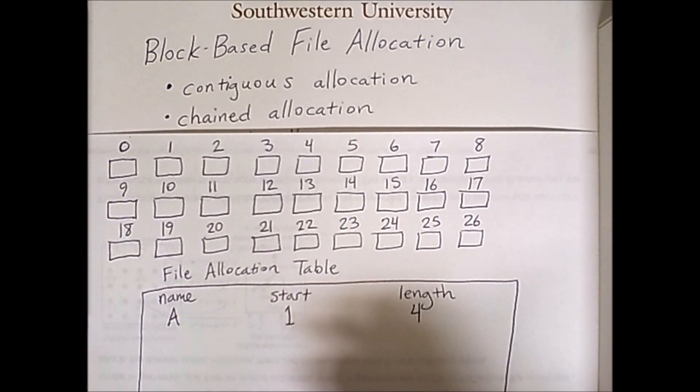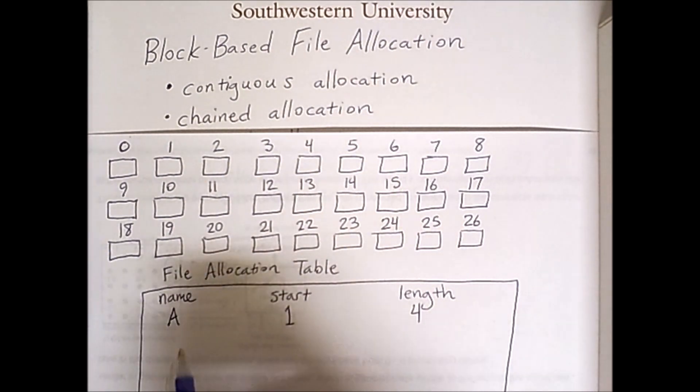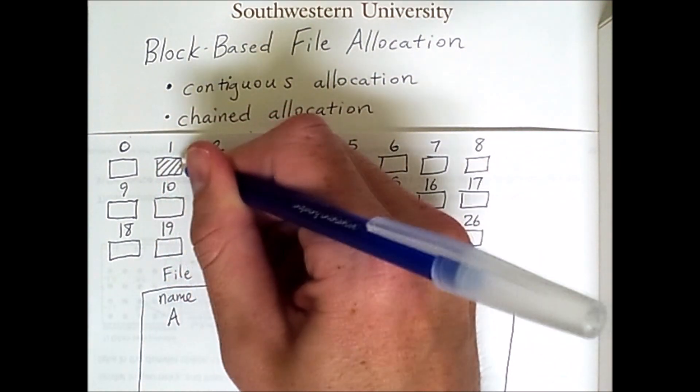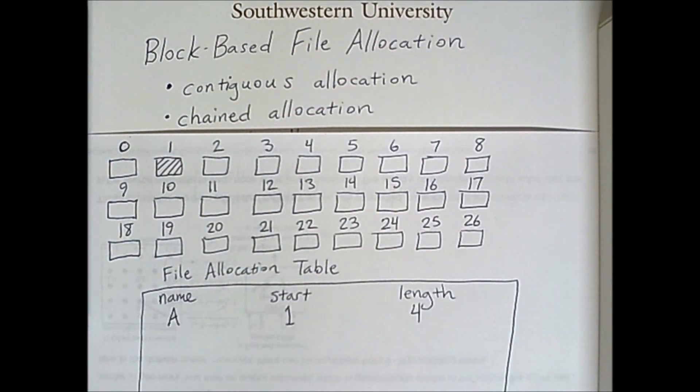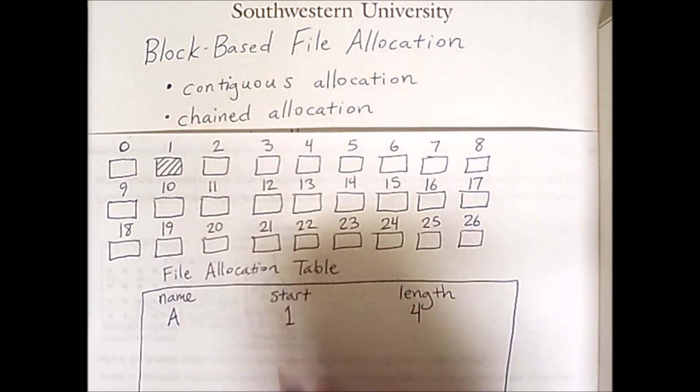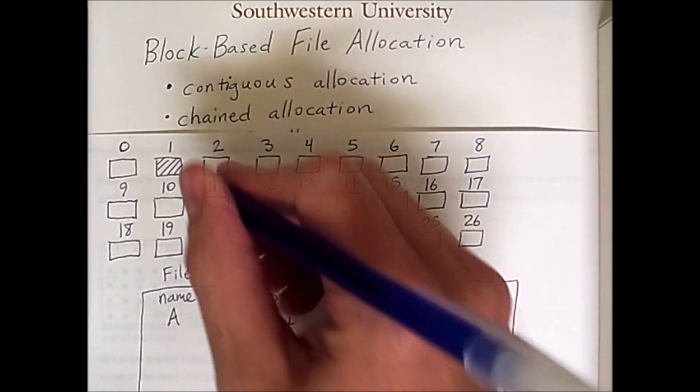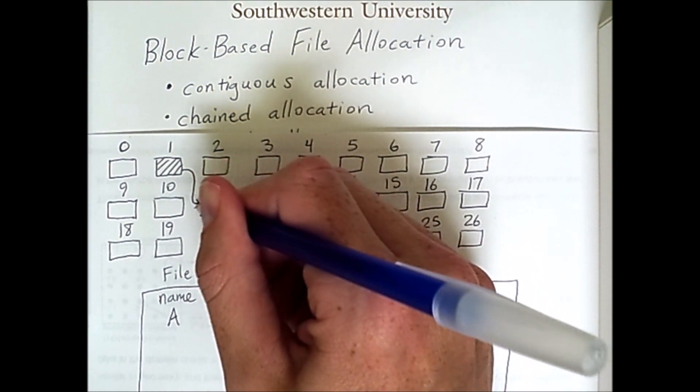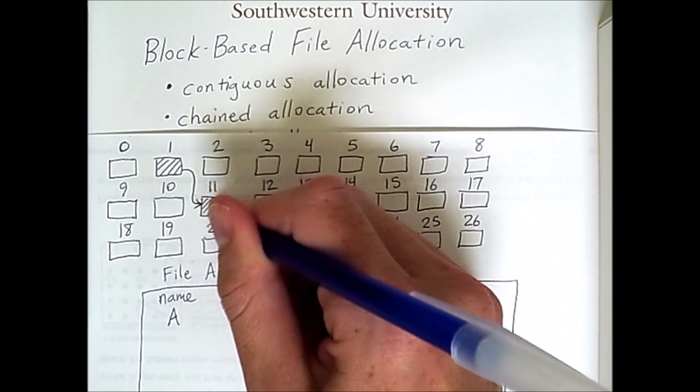An alternative form of file allocation is chained allocation. Now here is an empty disk and I'm going to add a file A that starts at block 1 and has a length of 4 but the way it's represented is with a sequence of chain pointers. So for example I'm starting at block 1 so this block will contain part of the file. However from that point there will be a pointer to where the next block of the file is located and that could in principle be anywhere on the disk. I'll draw it to block 11 and so the next block of the file is here.